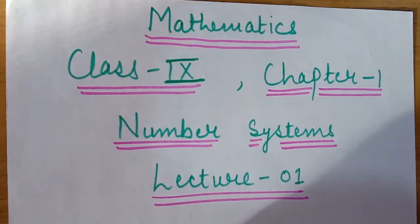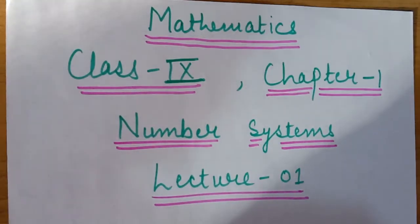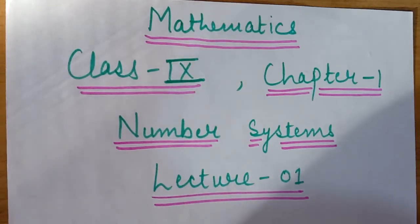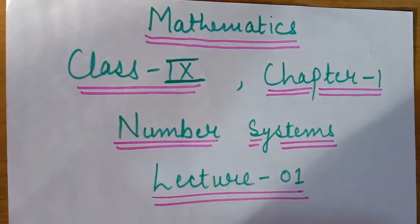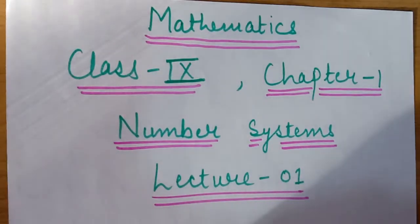The first question is: what is number system? Number system is a writing system for expressing numbers. Now we will start with different types of numbers.